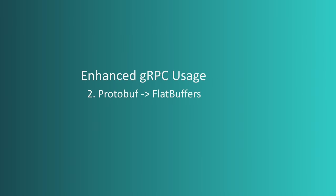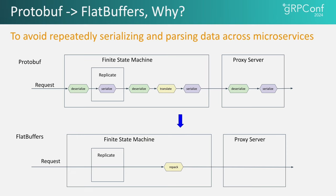Now let's move on to our second enhancement: replacing protobuf with flat buffers. The motivation behind this shift is to avoid the repeated serialization and deserialization of data across microservices. The top diagram shows how data was handled using protobuf — after data is serialized, it needs to be deserialized once more when it enters another microservice, and similarly the deserialized data needs to be re-serialized when stored. This cycle continues, and the repeated serialization and deserialization adds latency and CPU overhead to the system, leading to possible performance bottlenecks.